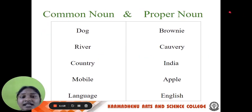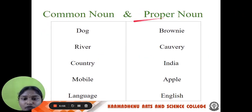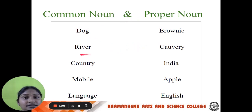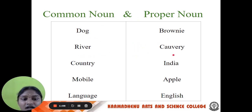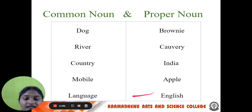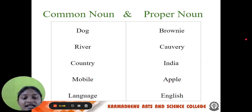Next, let me differentiate between common and proper noun. For example, dog — its specific name is Brownie. River is common; giving it a name like Kaveri makes it proper. Country — India. Mobile — Apple. Language — English, Tamil. These specific names are the proper nouns.